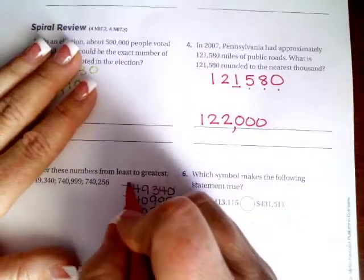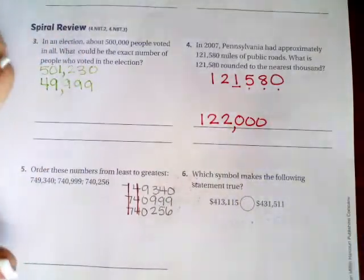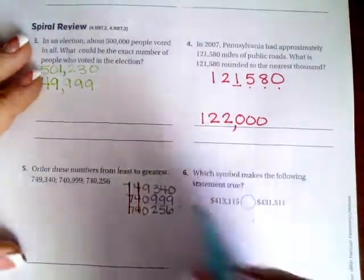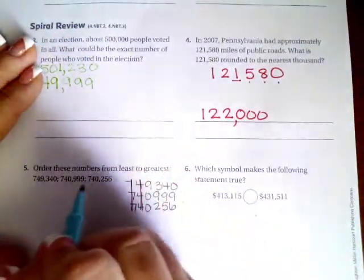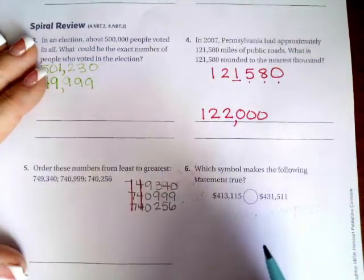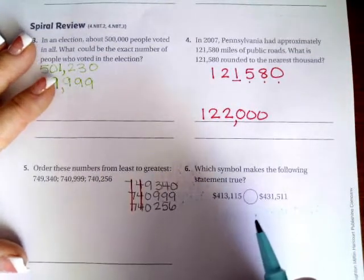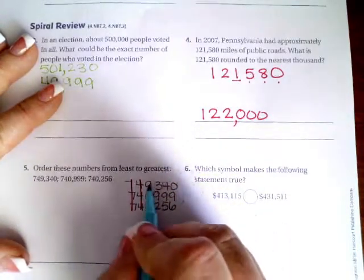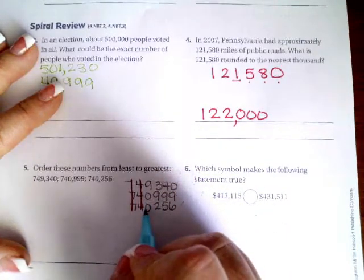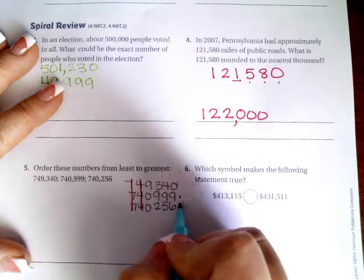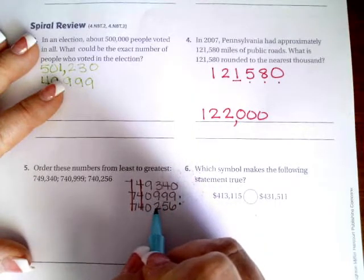Okay. So the sevens and the fours are the same. That's not going to change. So now I need to look at the next numbers. Well, I need them from smallest to biggest. Least to greatest means smallest to biggest. So I need to look for the next smallest number. Well, both of these have zeros. So I need to look at the next number. This one's a nine and this one's a two.